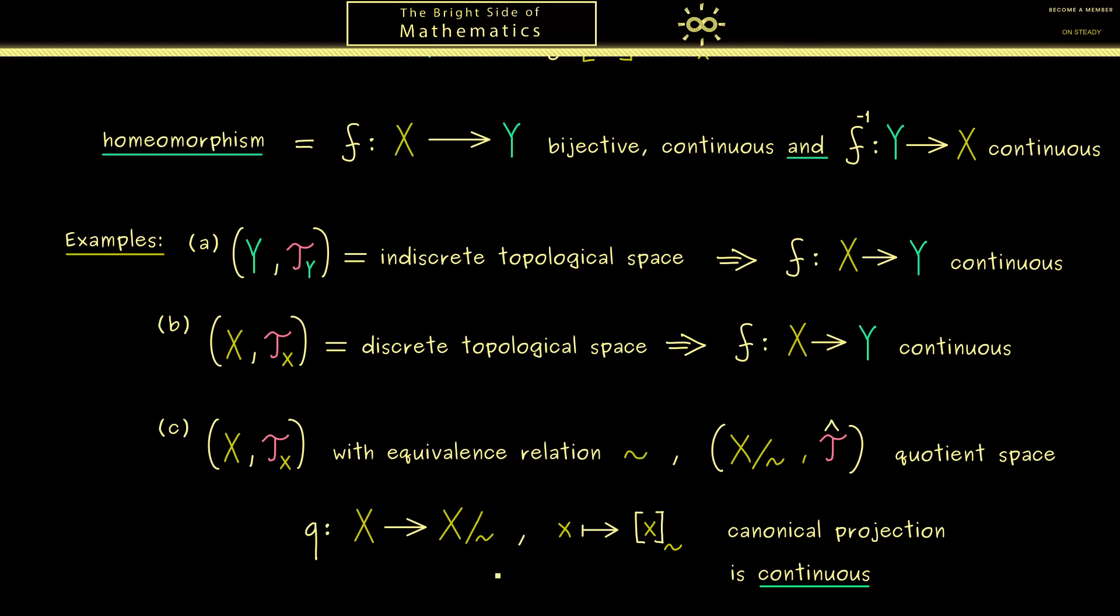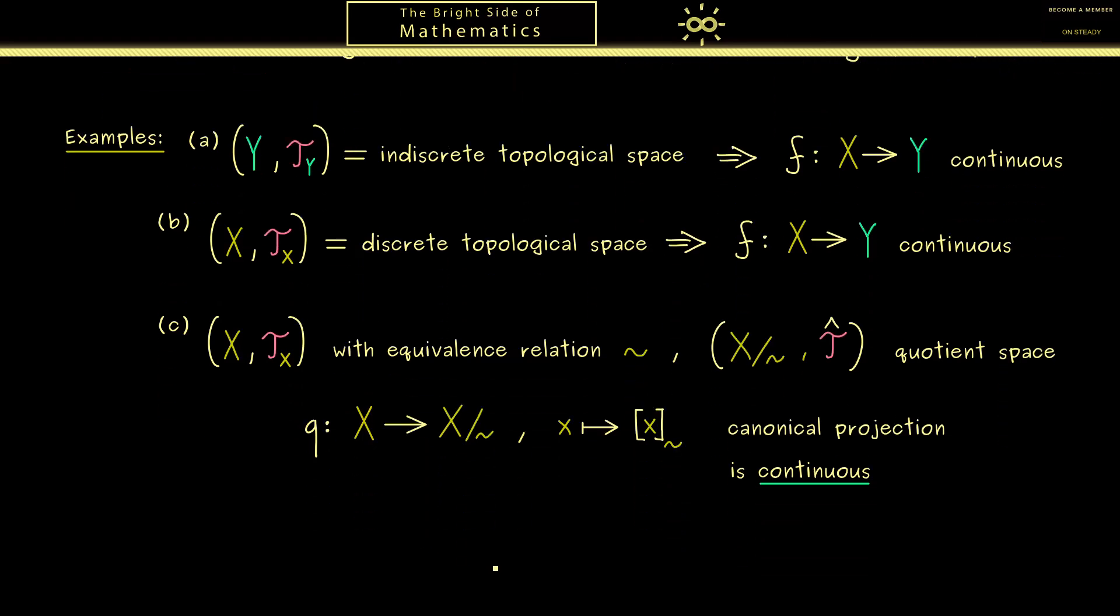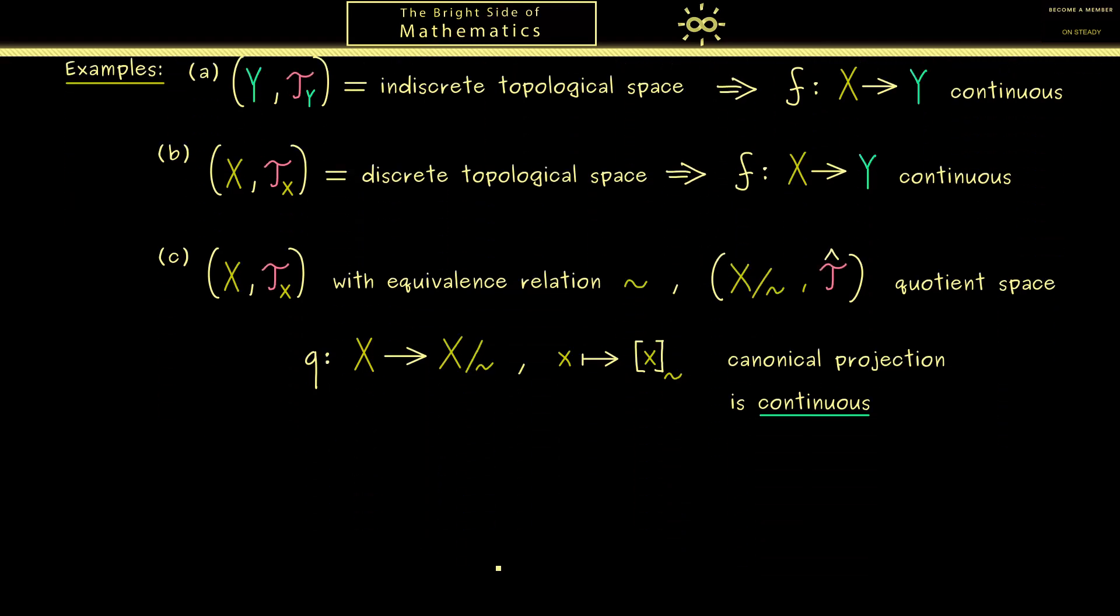There we have some general examples, but before we continue we should go one step back and recall the introduction. There we also discussed continuity by using sequences. And indeed this leads to a second continuity definition. So even if we take abstract topological spaces X and Y, we know that the notions of a sequence and a limit make sense.